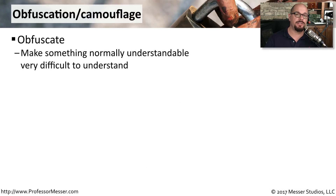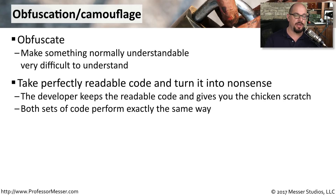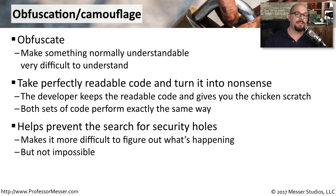Obfuscation means taking something that's perfectly understandable and turning it into a form that makes it very difficult to understand. We see this often with source code — we can take source code and scripts that are easy to follow and turn them into something that makes it very difficult to follow the logic within a particular script. This not only hides the logic of the script or source code, but also hides any potential security holes and makes it very difficult for someone to understand exactly how an application is functioning.